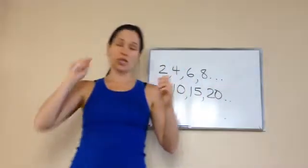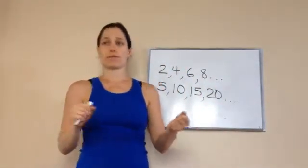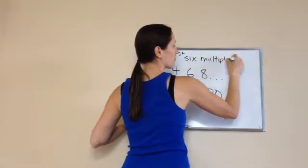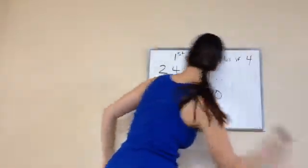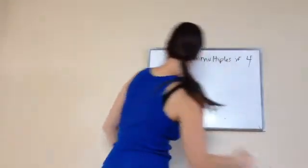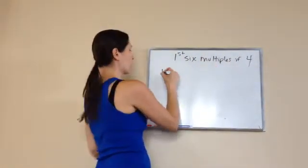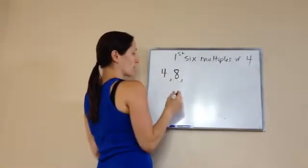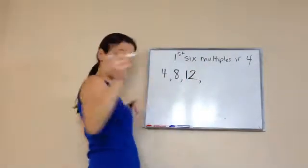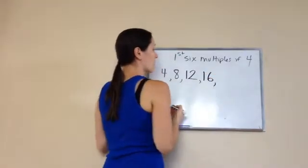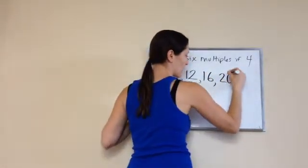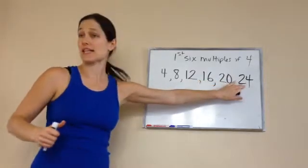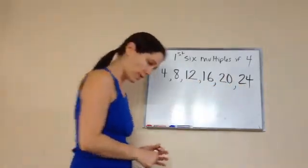So if I asked you, what are the first 6 multiples of 4? Let's do the first 6 multiples. 4 times 1 is 4. That's the first one. 4 times 2 is 8. 4 times 3 is 12. 4 times 4? 16. 4 times 5? 20. And 4 times 6? 24. Very good. So that's 1, 2, 3, 4, 5, 6. That's the first 6 multiples of 4. You get it?